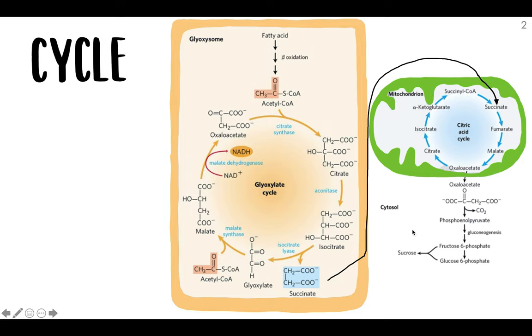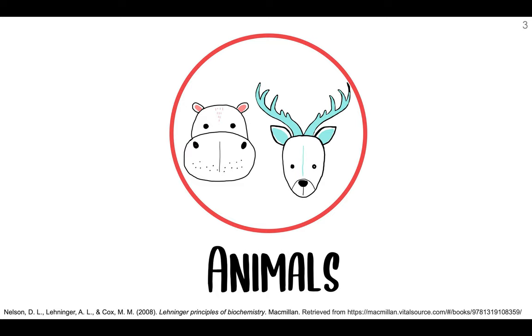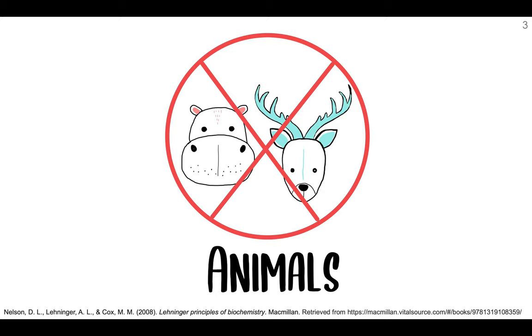Lastly, we keep talking about plants, but what about animal cells? Well, animals cannot make sugar from fats, and this is because we don't have the glyoxylate cycle. More specifically, the reaction of pyruvate dehydrogenase with acetyl-CoA is irreversible, so we can't go back.